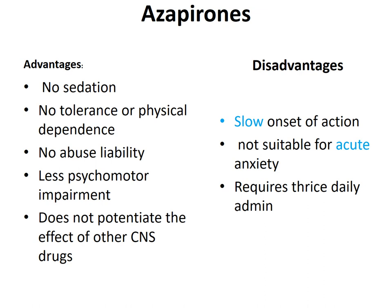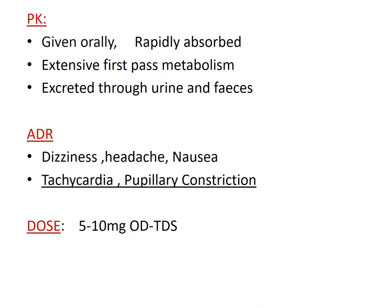What are the advantages and disadvantages of using azapirones as anti-anxiety drugs? The advantages are: they do not produce any sedation, no tolerance or physical dependence, no abuse liability, less impairment of psychomotor functions, and they do not potentiate the actions of other CNS drugs. Disadvantages include slow onset, so they are not suitable for acute situations, and they usually require thrice daily administration, so patient compliance could be very low. The most common route is oral; it is rapidly absorbed, has extensive first-pass metabolism resulting in very low bioavailability, and is excreted through urine as well as feces.